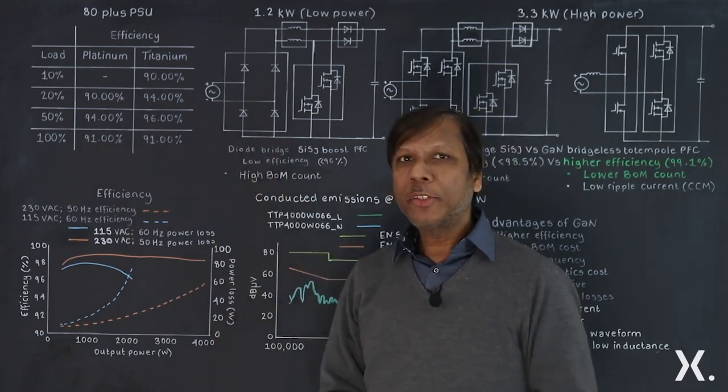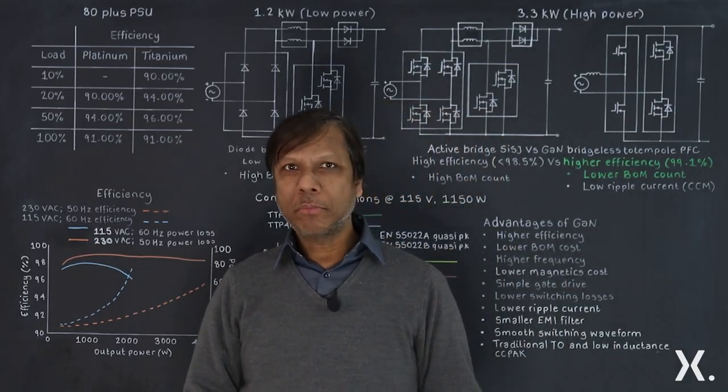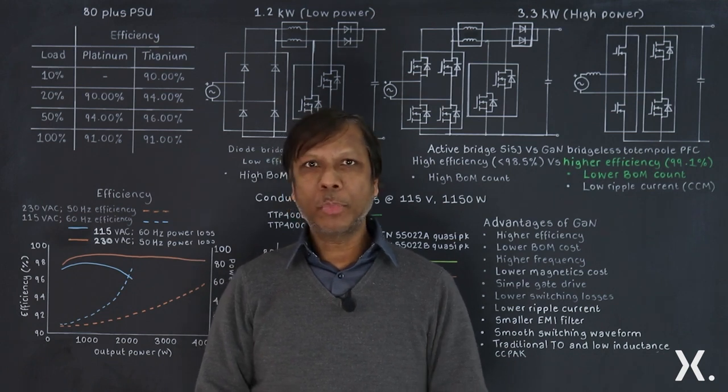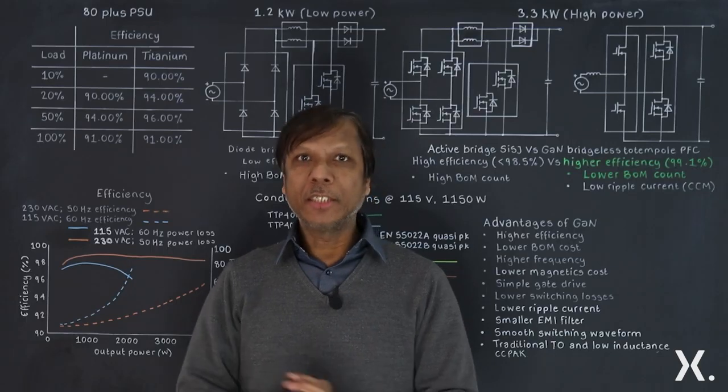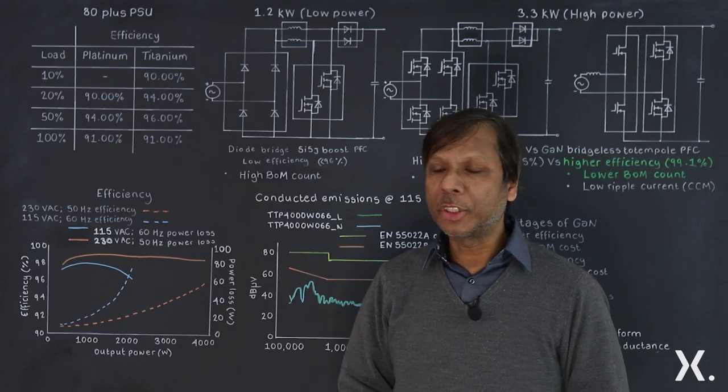80 Plus power supply unit comes with different forms and shapes, starting from 80 Plus, then you have silver, bronze, gold, platinum, and then titanium, increasingly increasing the requirement for efficiency.